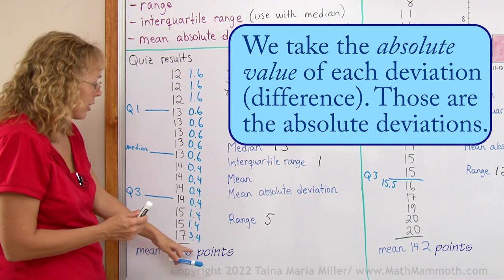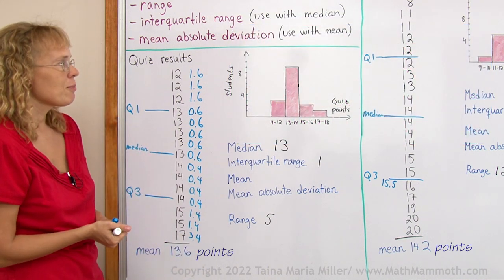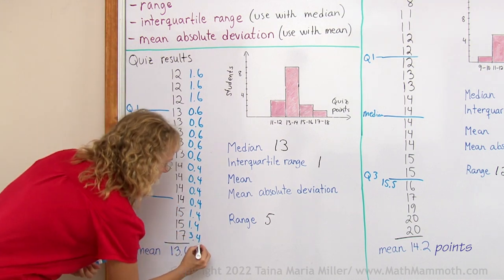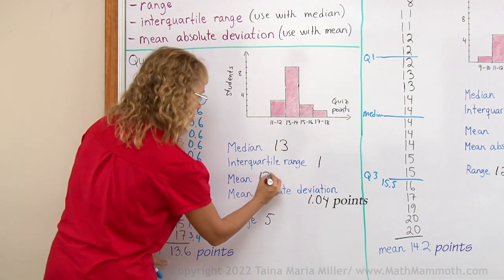And I have calculated all this now beforehand so we don't have to take time adding them all up and dividing. And the mean absolute deviation for this set is 1.04. The mean was 13.6.